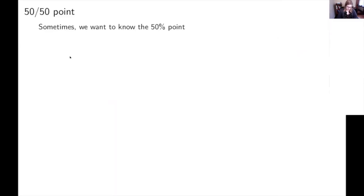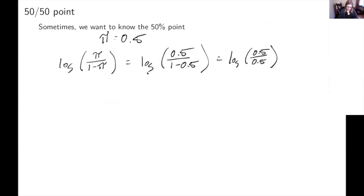So we want to know the place at which pi is equal to 0.5. And so I'm just going to think about the log odds, log pi over 1 minus pi for 50 percent. That's going to be log of 0.5 over 1 minus 0.5, which turns into log of 0.5 over 0.5, which turns into log of 1, because anything over itself is 1. And log of 1 is 0.